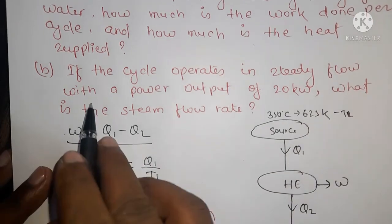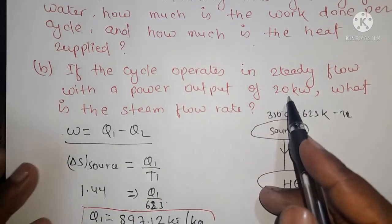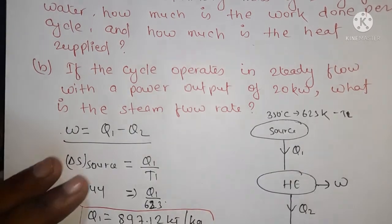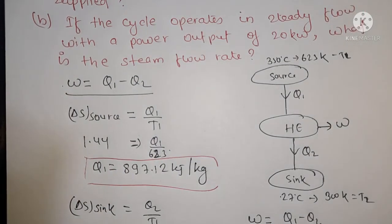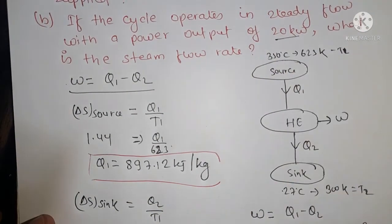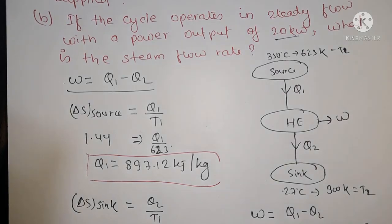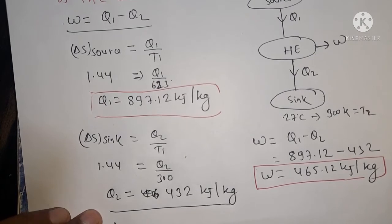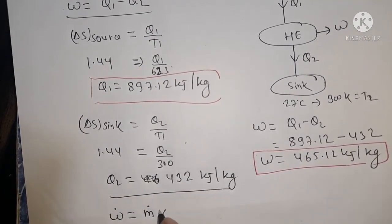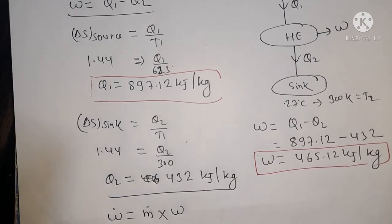Part B: if the cycle operates in steady flow with a power output of 20 kilowatt, what is the steam flow rate? The Carnot cycle runs in steady flow — steady flow means the flow is independent of time. With a power output of 20 kW, we need to find the steam flow rate.